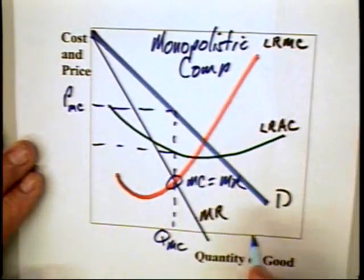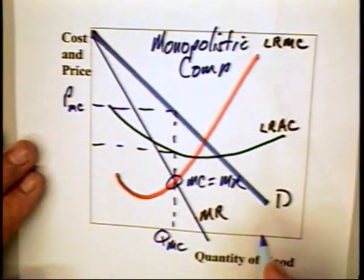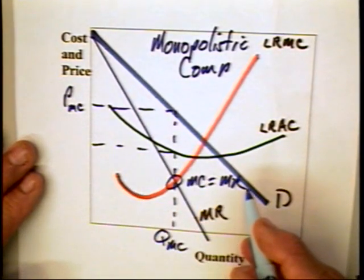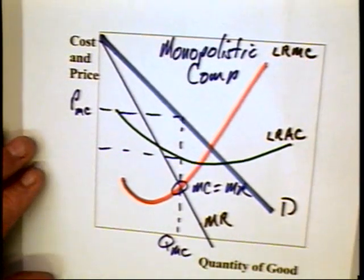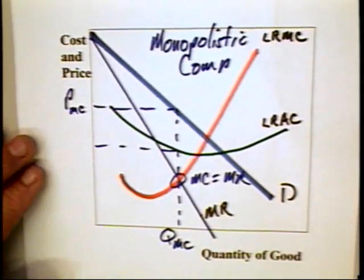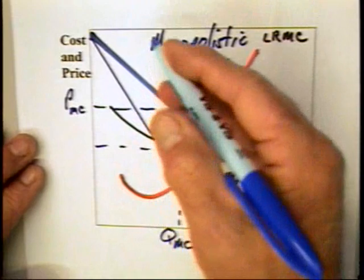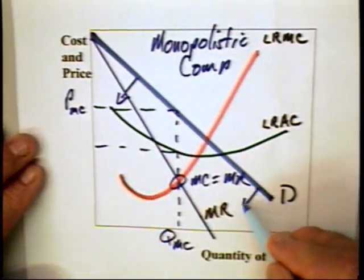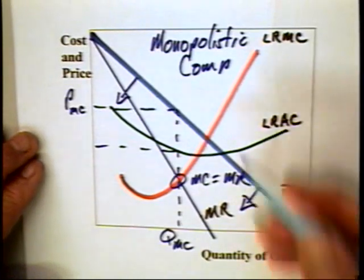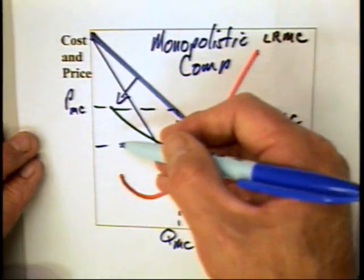Now that may be a short run phenomenon because the profit that can be extracted by this producer will encourage other producers to come into the market. And when other producers come into the market, there will be more producers dividing up the market demand for it, and we should expect the demand curve to decline.